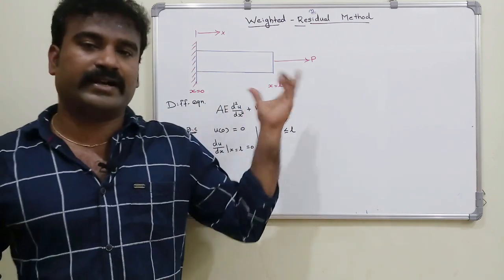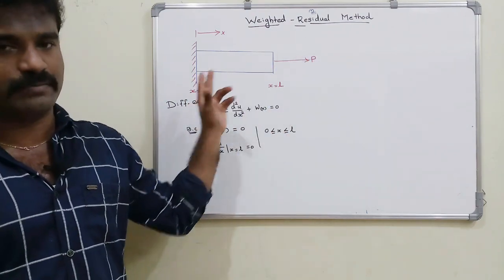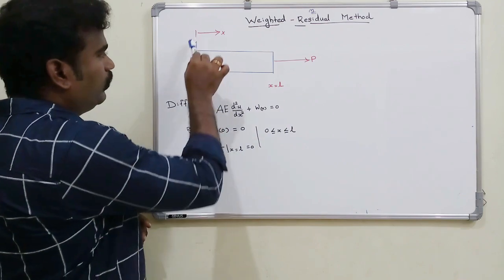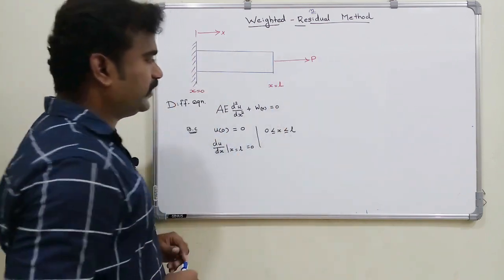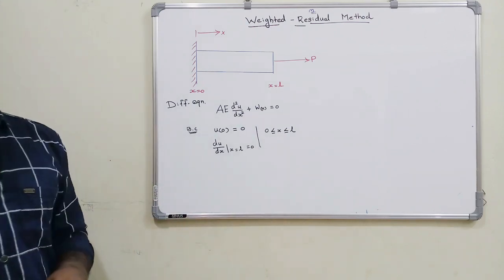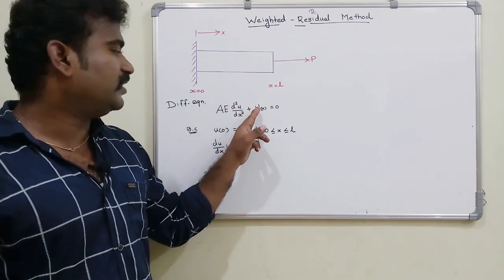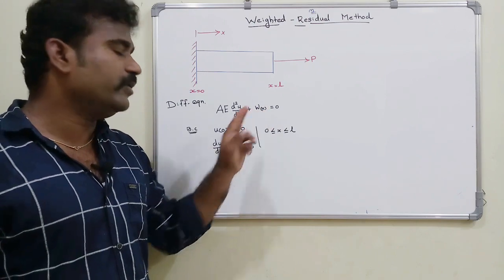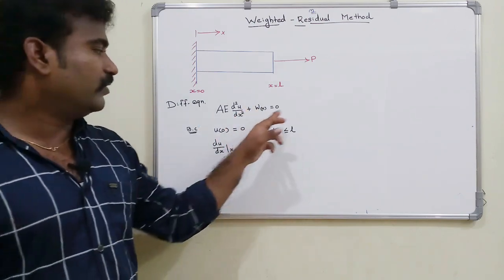A bar element is axially loaded — a one-dimensional bar element where one end is fixed and a load is applied. The governing differential equation is: AE · d²u/dx² + w(x) = 0, where w(x) = p.